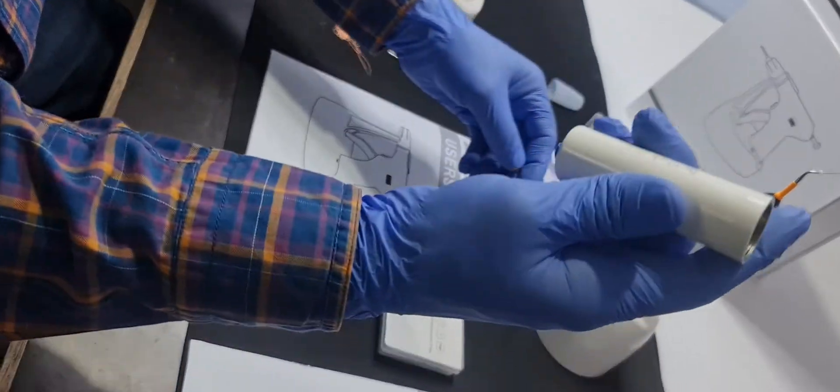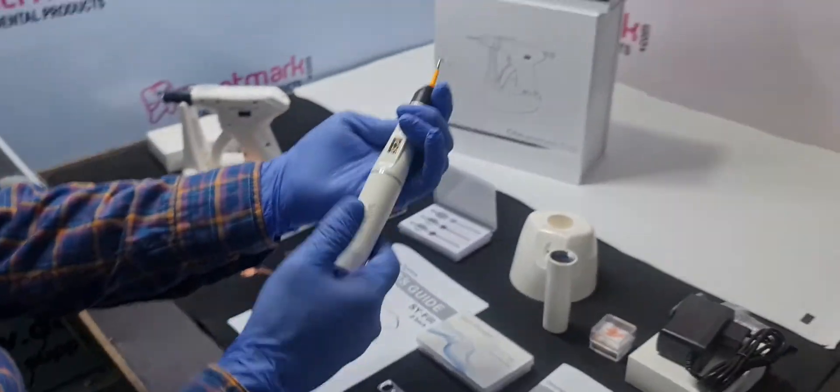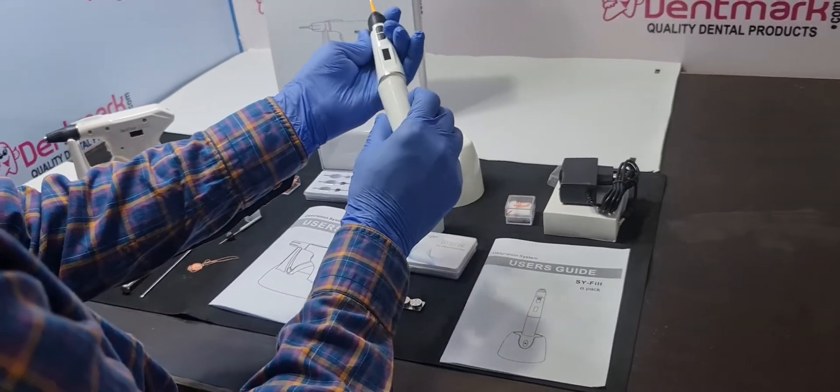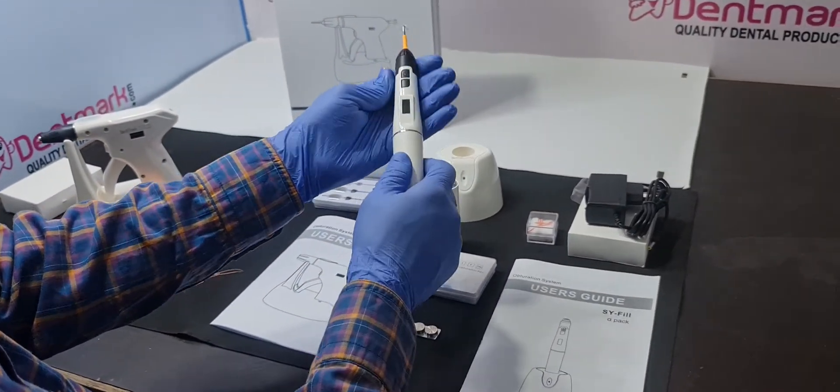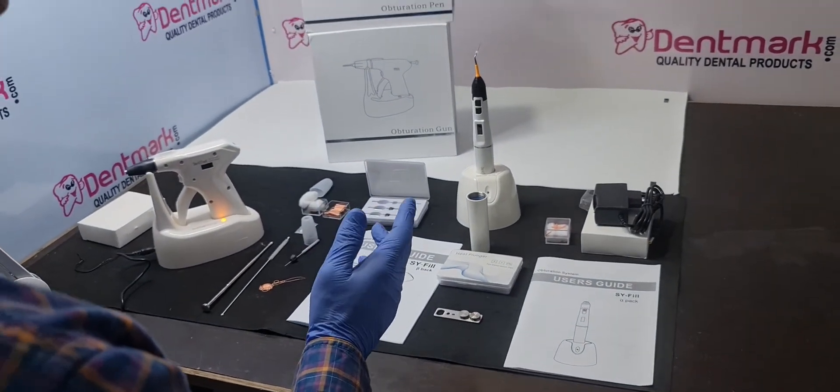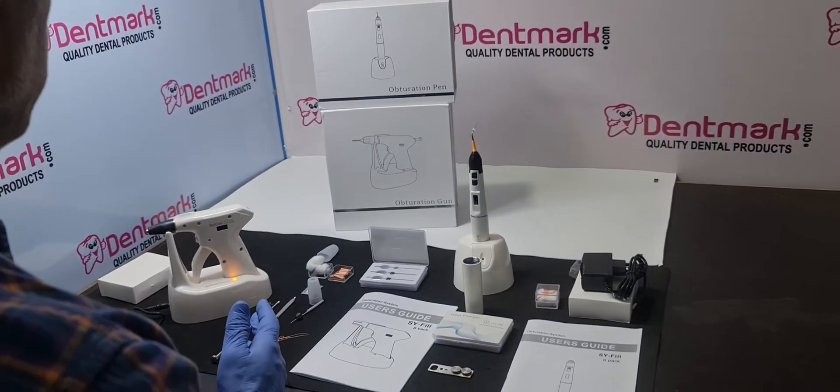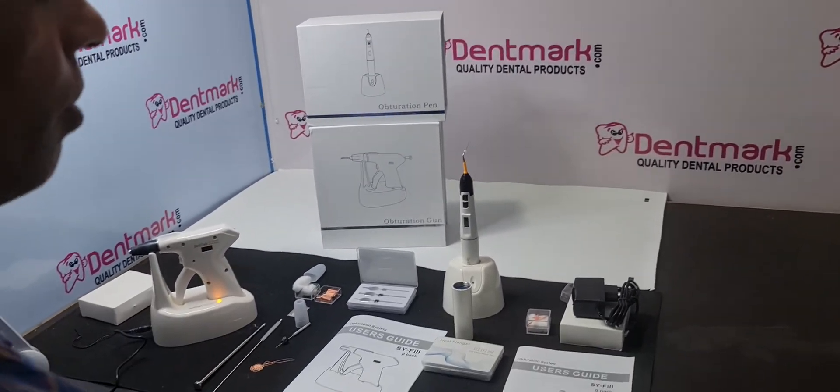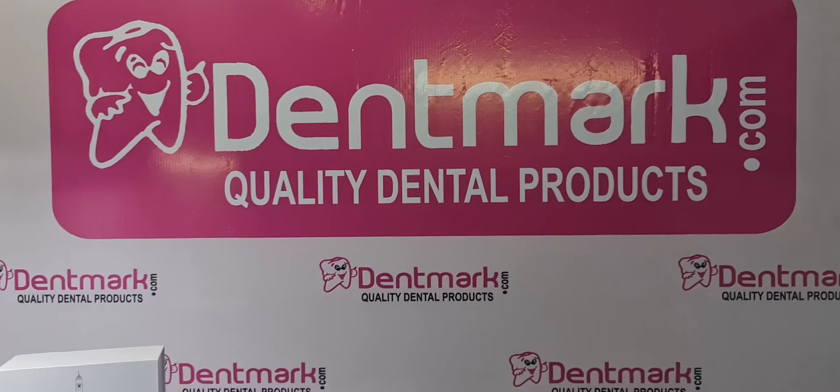It comes with extra battery also. Once your battery has problem or it is down, you can change the battery. You can buy this obturation pen OP07 and obturation gun OP08 separately or in combo pack on Dentmark app and Dentmark e-commerce site.